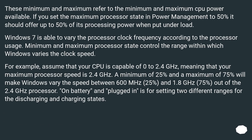Minimum and maximum refer to the minimum and maximum CPU power available. If you set the maximum processor state in power management to 50%, it should offer up to 50% of its processing power under load. Windows 7 varies the processor clock frequency according to processor usage. For example, with a CPU capable of 2.4 GHz, a minimum of 25% and a maximum of 75% will make Windows vary the speed between 600 MHz and 1.8 GHz. The on-battery and plugged-in settings allow two different ranges for the discharging and charging states.